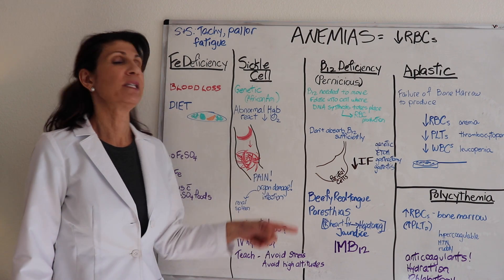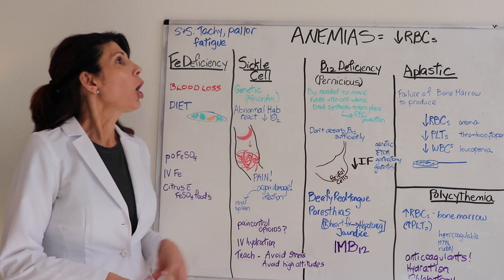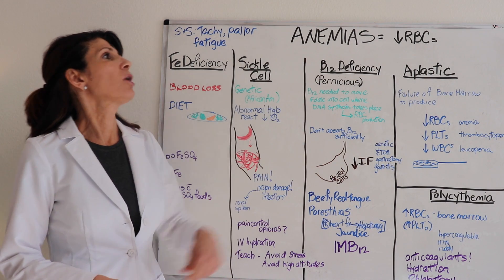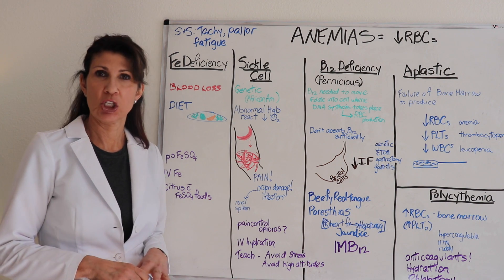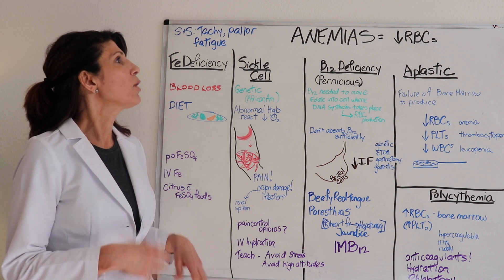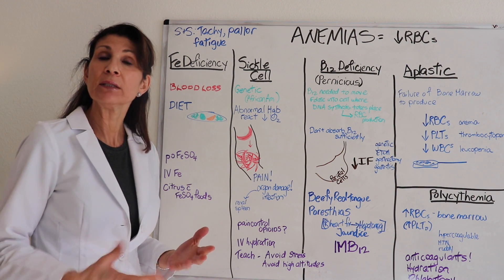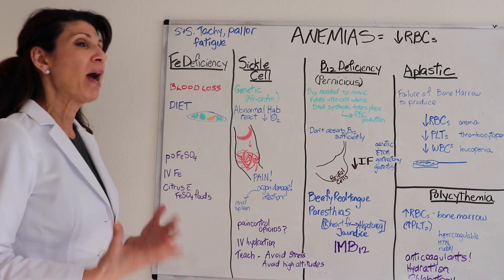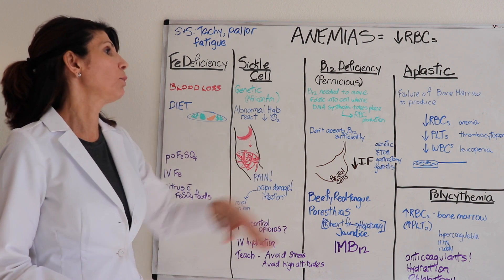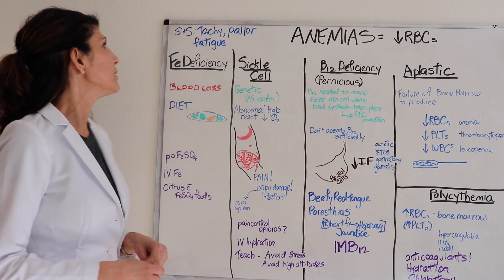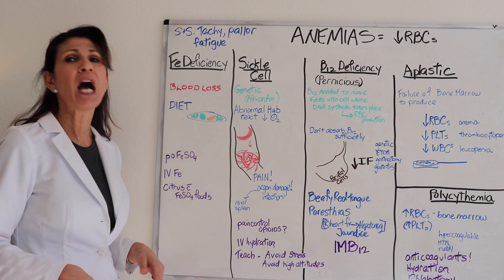This is a presentation of the various types of anemias. All anemias involve a diminished red blood cell count — a decreased H and H. With all anemias, patients are going to manifest tachycardia as a compensatory mechanism, pallor, and definitely fatigue. That's across the board. Let's look at the various types.